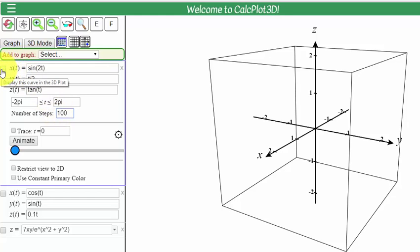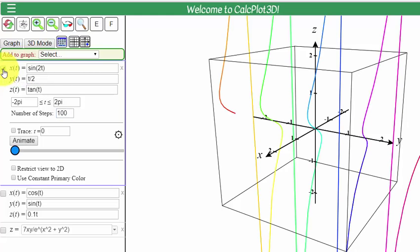Next, I need to click this little box. It allows me to view this space curve. I click that and there's my beautiful space curve.